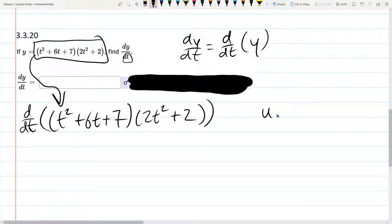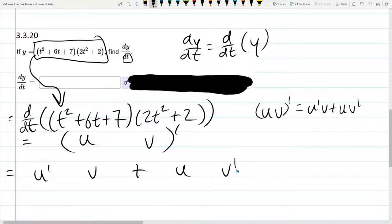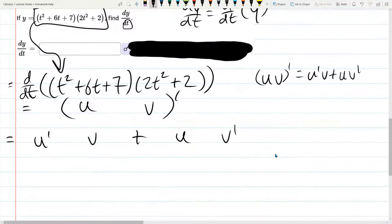We have a product rule. uv prime is u prime v plus u v prime. So what we're looking at is u and v. The derivative is written as a prime or could be written as a prime.